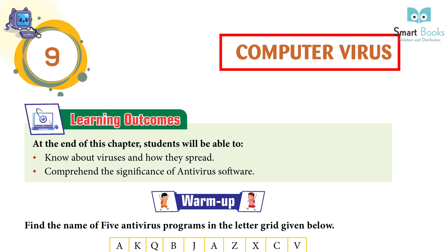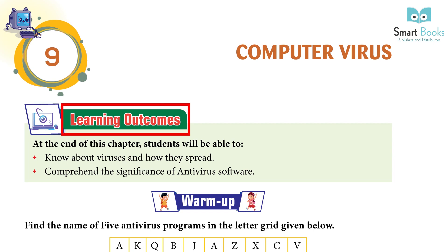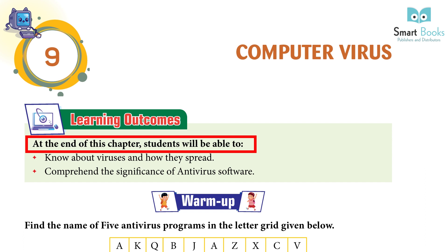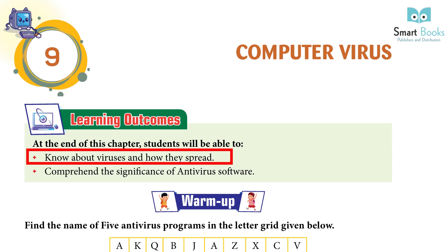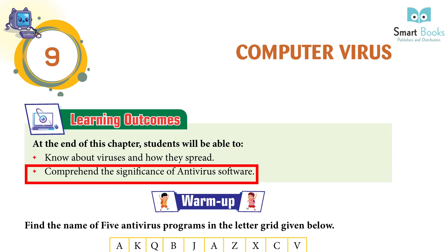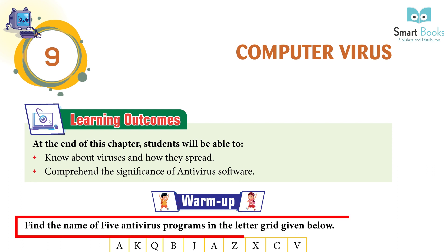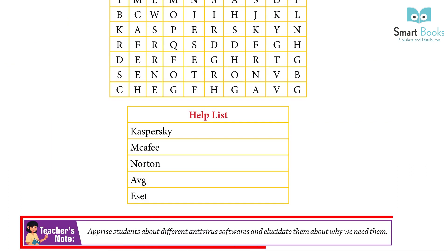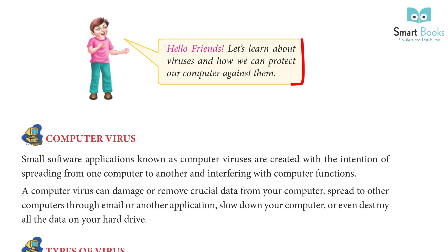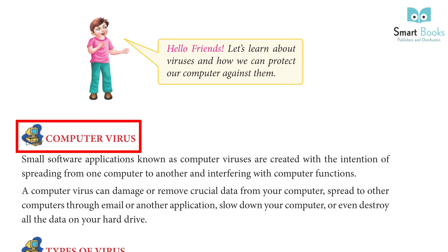Chapter 9: Computer Virus. Learning outcomes: at the end of this chapter, students will be able to know about viruses and how they spread, and comprehend the significance of antivirus software. Warm up: find the name of five antivirus programs in the letter grid below. Teacher's note: apprise students about different antivirus software and explain why we need them.